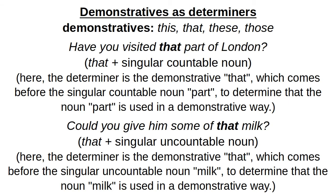Another example: 'have you visited that part of London?' 'Park' is a singular countable noun; 'that' comes before it and determines it is used in a demonstrative way. Another example: 'could you give him some of that milk?' Here 'that' comes before 'milk,' which is a singular uncountable noun, used in a demonstrative way.